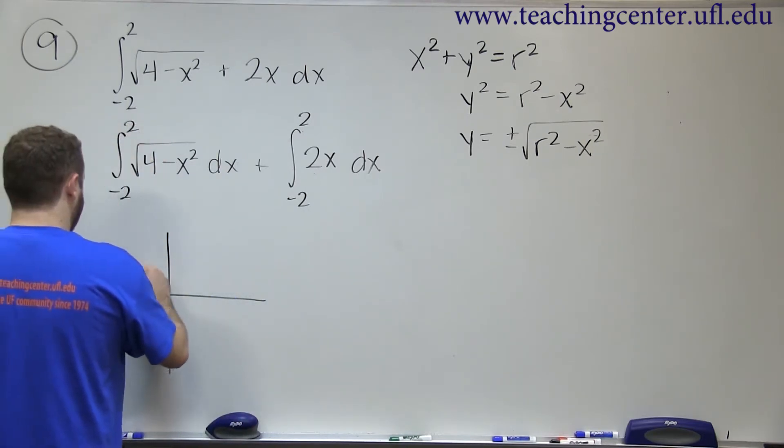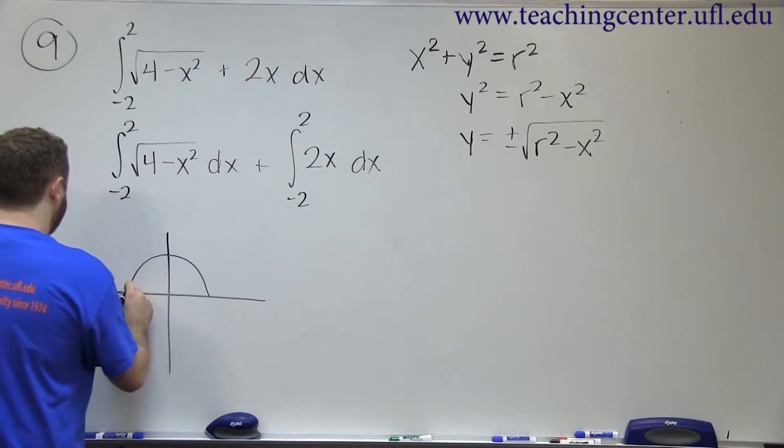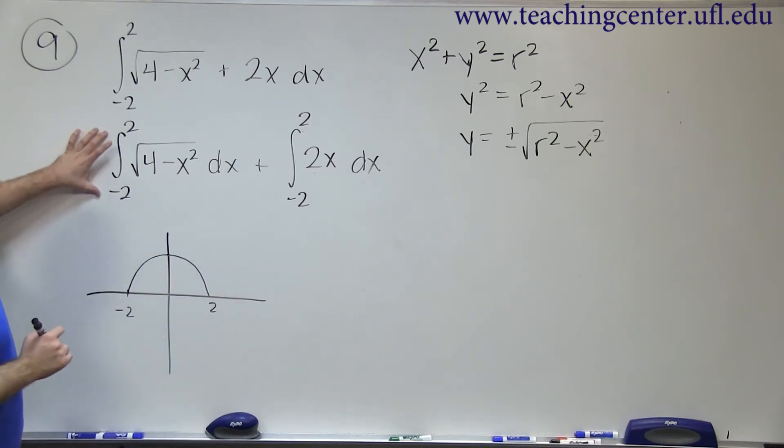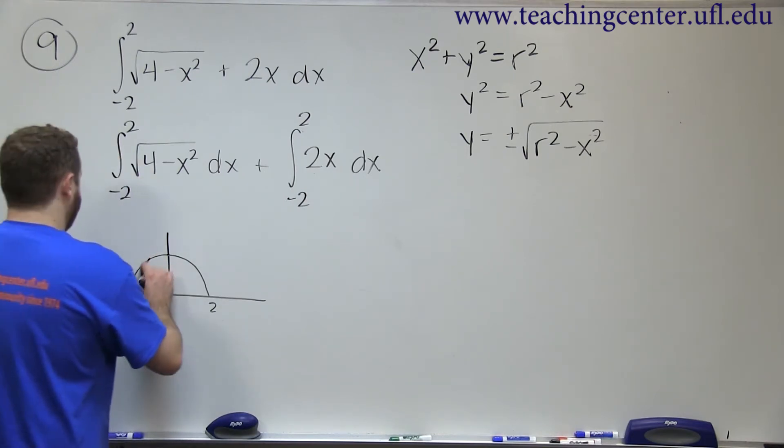So we just have the top half of a circle that goes from negative 2 to 2. That's what our integrative bounds are anyway, so that's fine. So we would just be wanting this area.